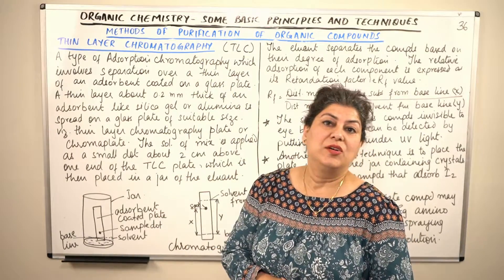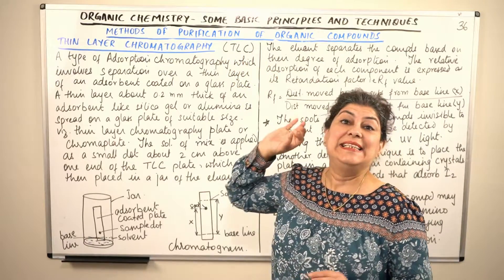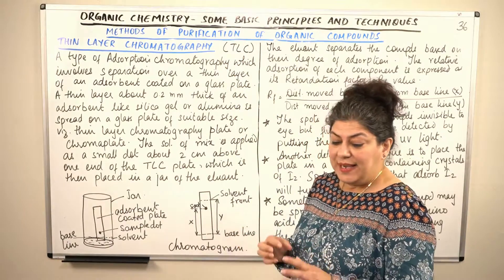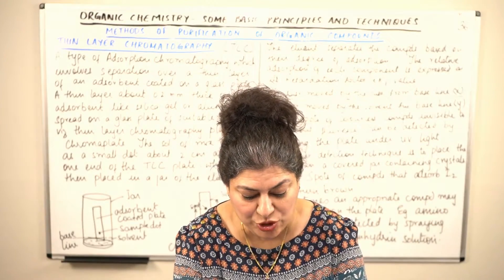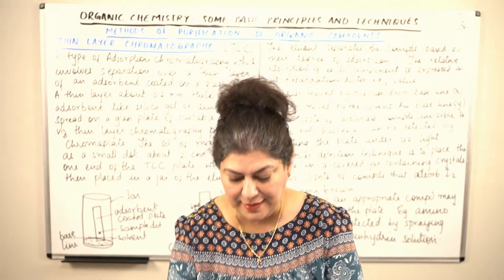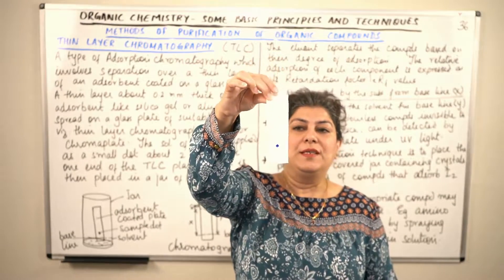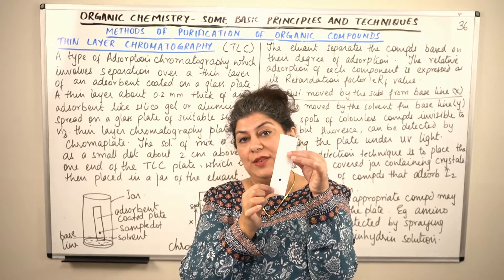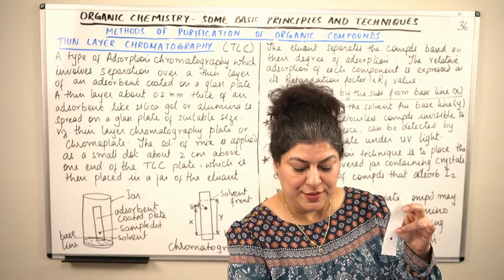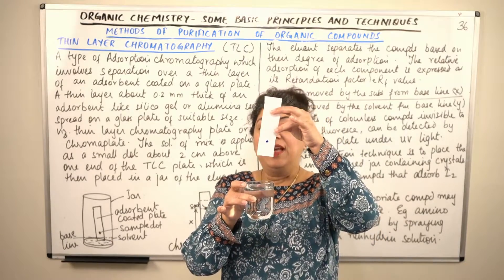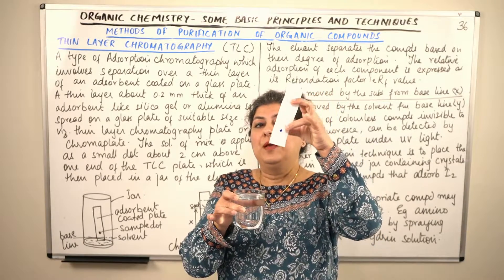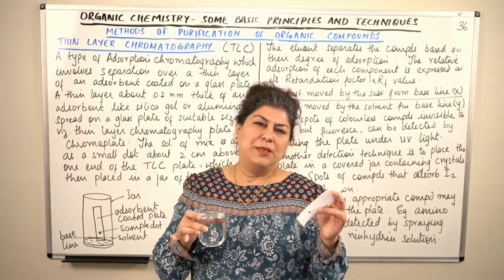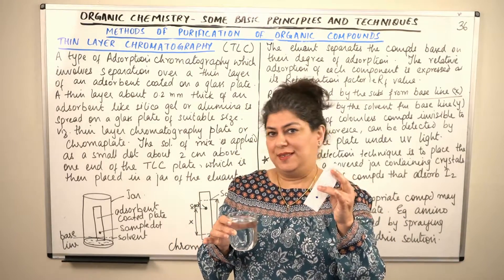Thin layer chromatography is also known as TLC. I explained earlier that if you take a little ink and put a dot on paper — like a paper towel — and insert it in a solvent such as water, the ink would get adsorbed on the paper. We usually use chromatographic paper in the laboratory, and a paper towel is not the appropriate stationary phase, but since I have no other alternative at home, this is how I would display it to you.